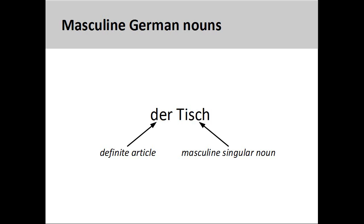The German noun 'Tisch,' meaning 'table,' has a masculine grammatical gender, so its definite article is 'der.' Here the grammatical gender does not indicate any biological gender of the noun.